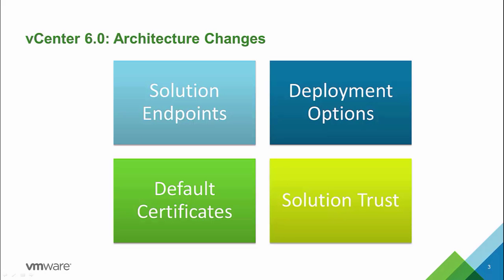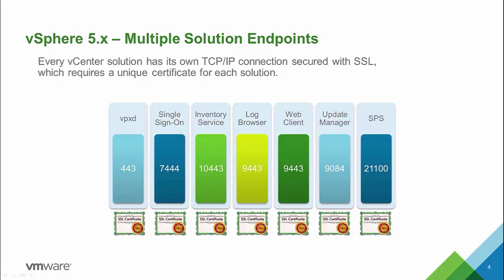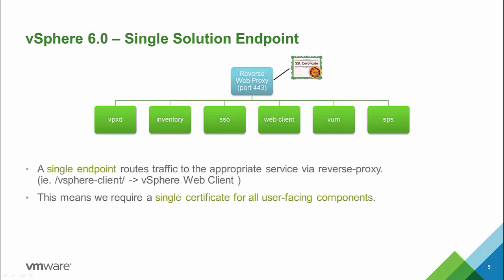First, a look at the architectural changes in 6.0 compared to 5.1 and 5.5. In vCenter 5.1 and 5.5, every service had its own endpoint. This required a unique certificate for each of them. In 6.0 this was changed to a single endpoint through which every service gets accessed, changing the requirements to just a single user-facing certificate.